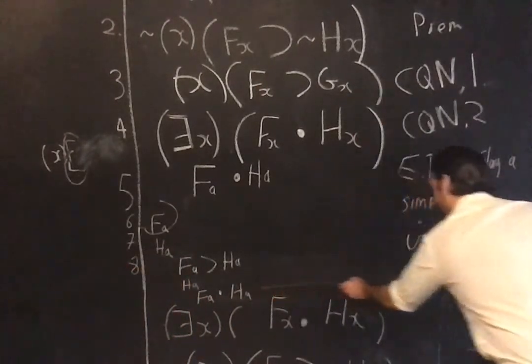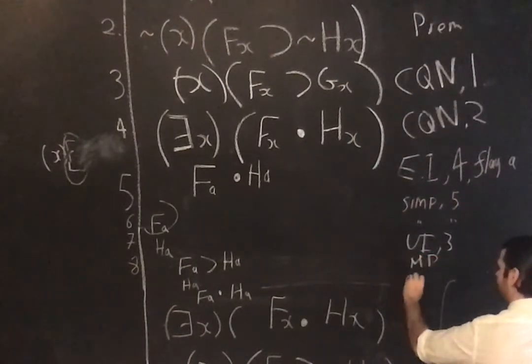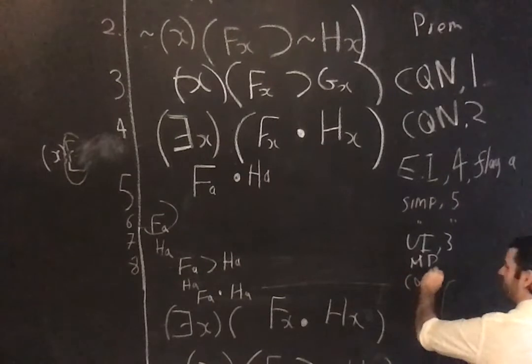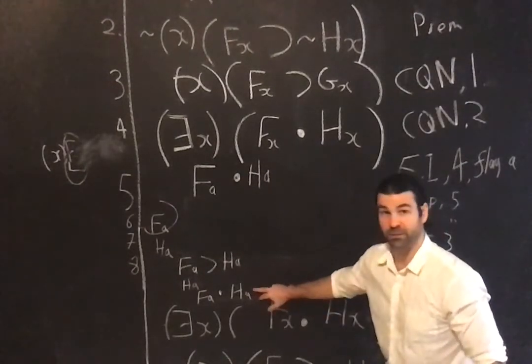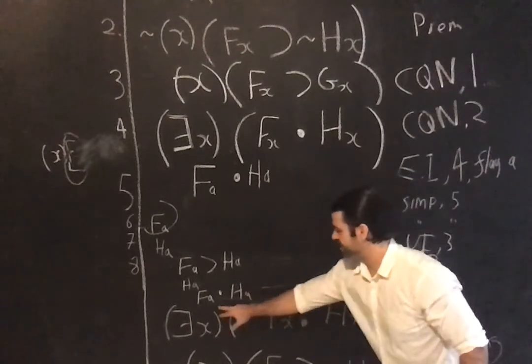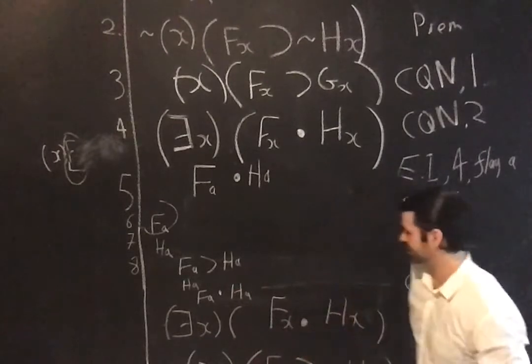Modus ponens. And then I can conjoin F and H, F, A, and H, A, to get F, A, and H, A, by the rule of conjunction. This one is modus ponens, modus ponens, and then there's a conj. Why have I done this? As you'll learn, in 15, this is the instance, this is in the form of the premise for an existential generalization.